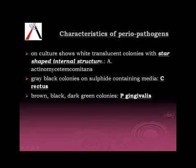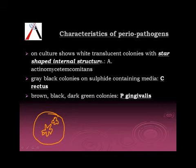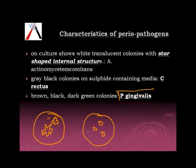Actinobacillus actinomycetemcomitans (AA) forms star-shaped colonies and typically causes a footprint appearance when you try to pick up these colonies. C. rectus produces brown or dark brown colonies. P. gingivalis is a pigment-producing bacterium. With this we come to the end of this part — thank you.